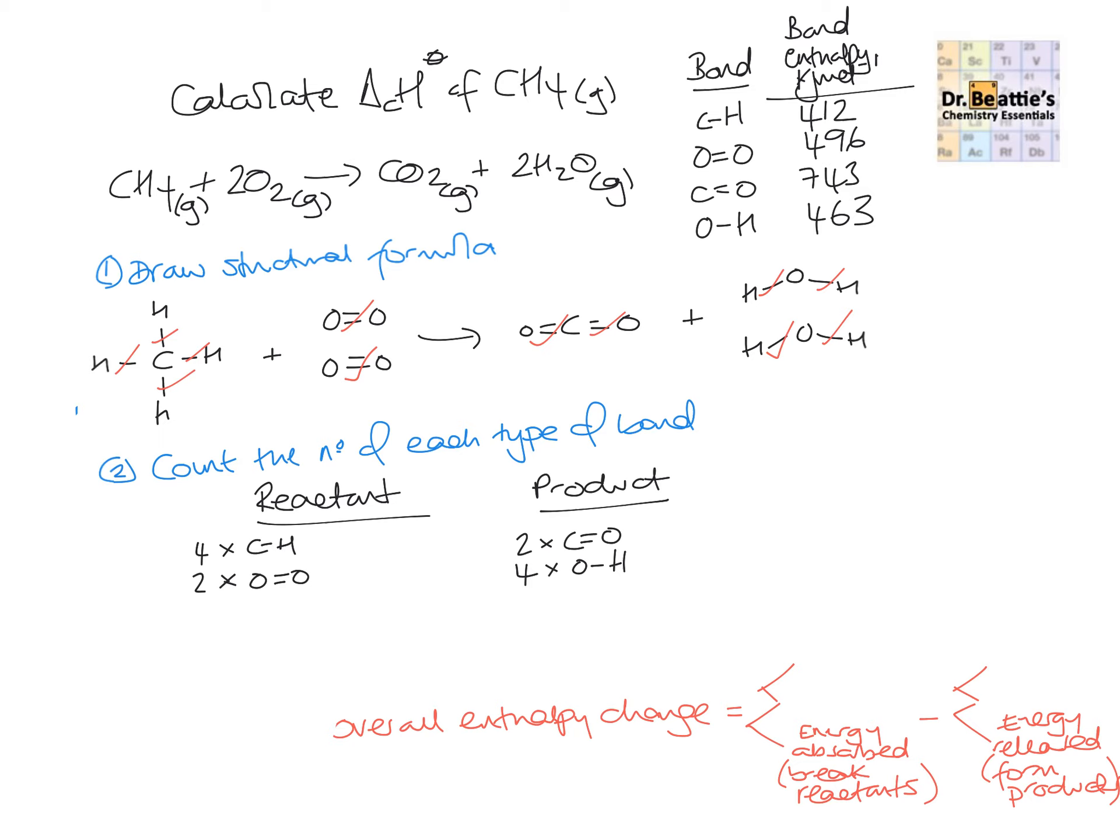So the first step is we're going to substitute in the bond enthalpy values. And so this is when we refer to our bond enthalpy data. So we know for each CH, it's 412, etc. And now all that remains is we want to work out the overall energy required to break the reactants. So using the sum of all of the values in the reactant column. And then we've got this term here. And then what we want to do is take away the sum of all the values in the product column to form part of this.